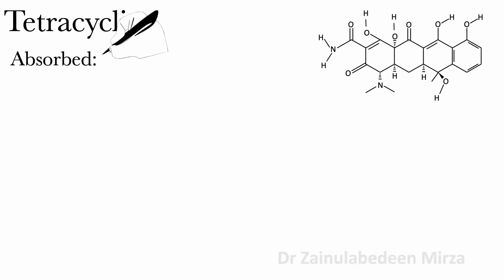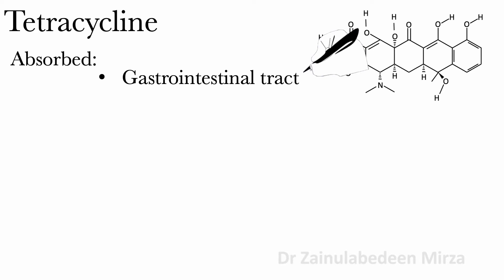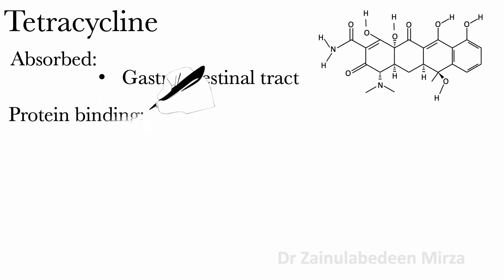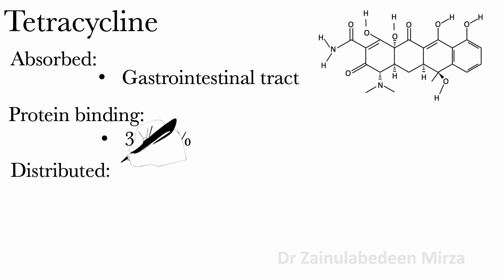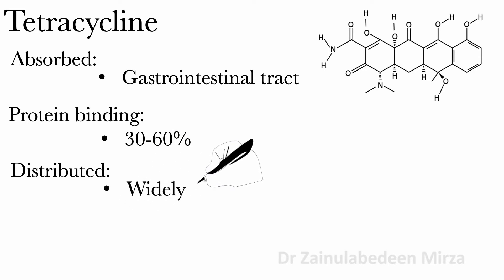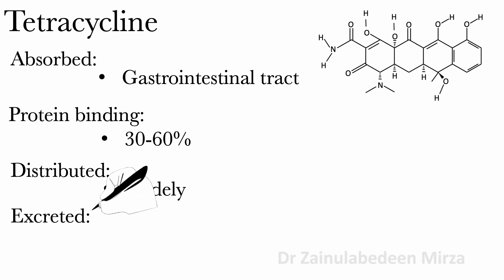Tetracycline is absorbed from the gastrointestinal tract. Protein binding of tetracycline is about 30 to 60 percent. Tetracycline is widely distributed and excreted in the urine.